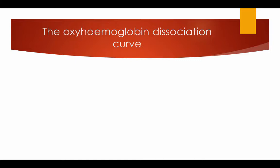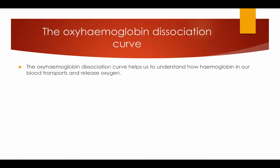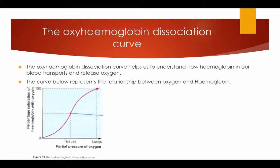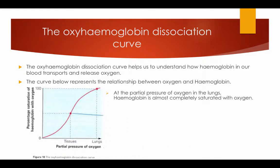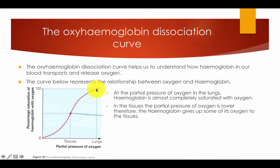The oxyhaemoglobin dissociation curve helps us understand how haemoglobin in our blood transports and releases oxygen. The curve represents the relationship between oxygen and haemoglobin. At the partial pressure of oxygen in the lungs, haemoglobin is almost completely saturated with oxygen. In the tissues, the partial pressure of oxygen is lower, therefore the haemoglobin gives up some of its oxygen to the tissues.